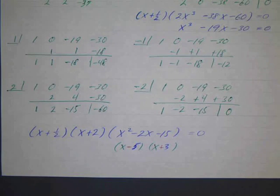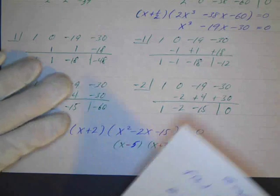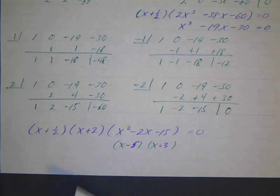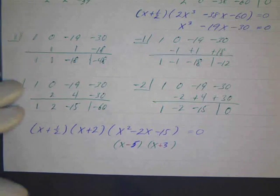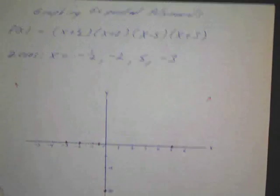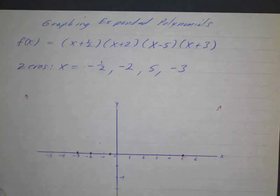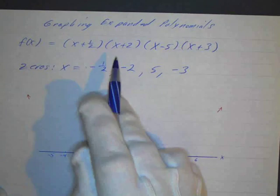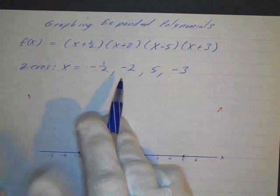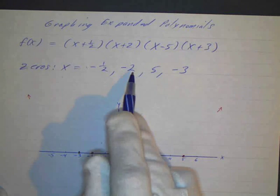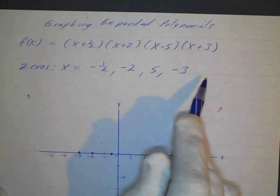So these are my factors: x plus 1 half, x plus 2, x minus 5, x plus 3. And these are my zeros: negative 1 half, negative 2, 5, negative 3.